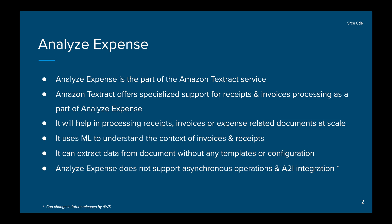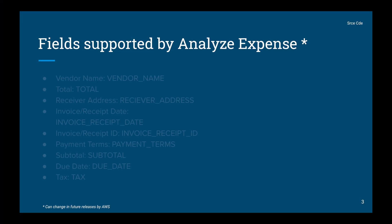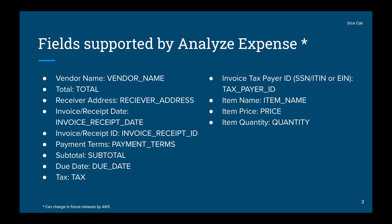These are the fields that Analyze Expense is able to detect in the form of key-value pairs from a given document. For example: vendor name, receiver address, total, subtotal, due date, and product information. These are the fields currently supported by the Analyze Expense API, and it will return this information as key-value pairs that you can extract from the response.